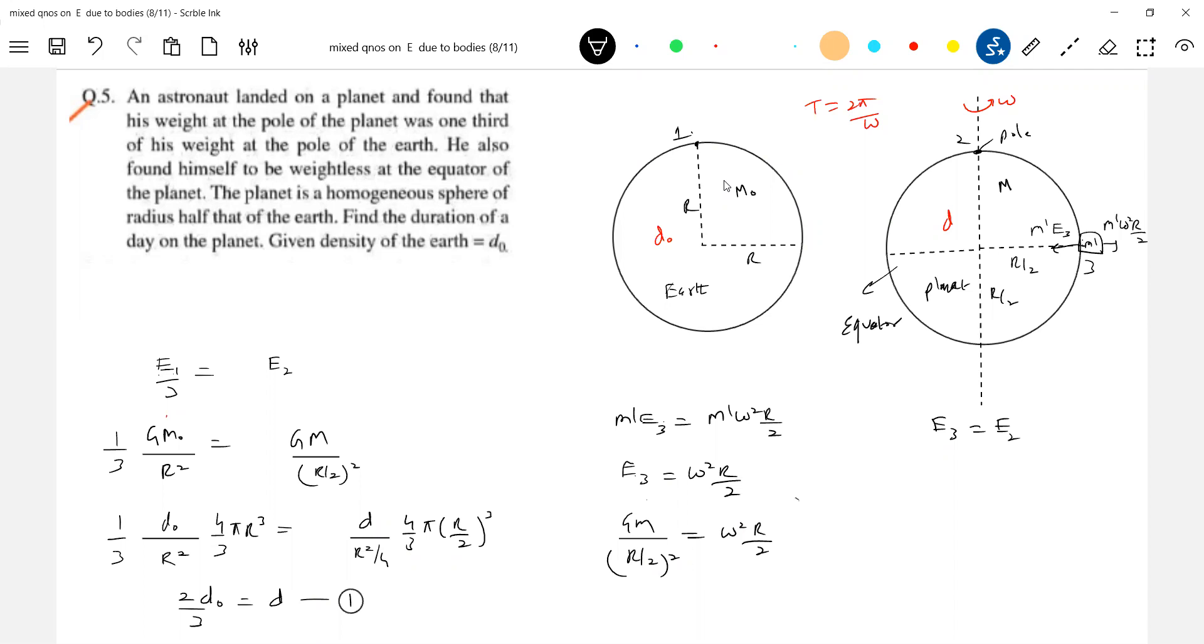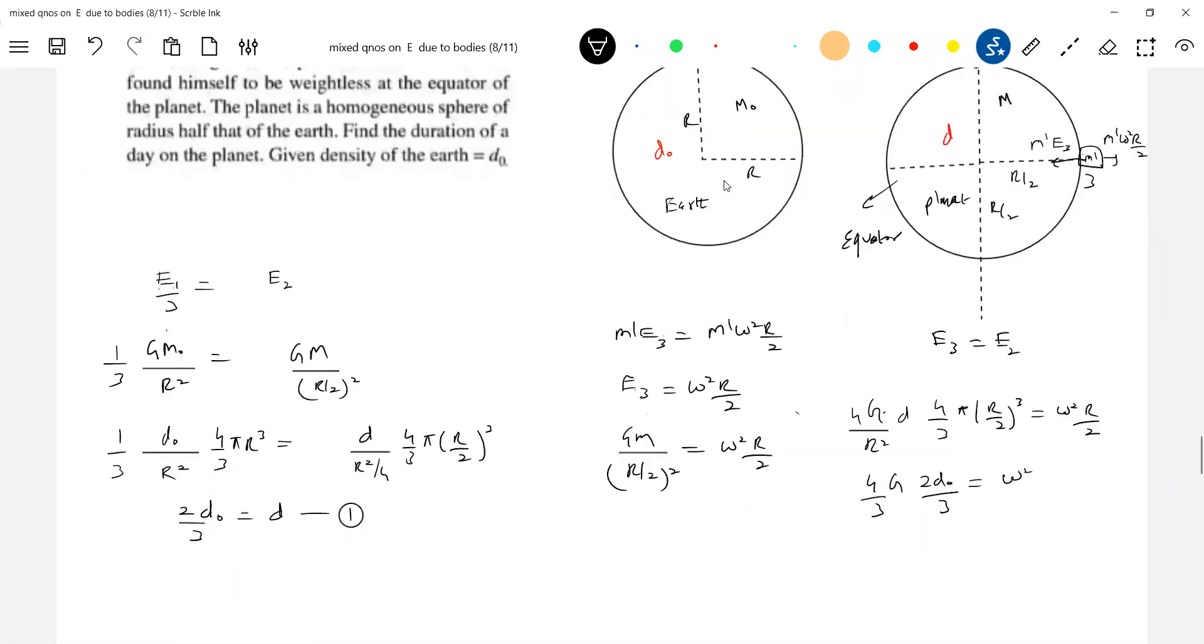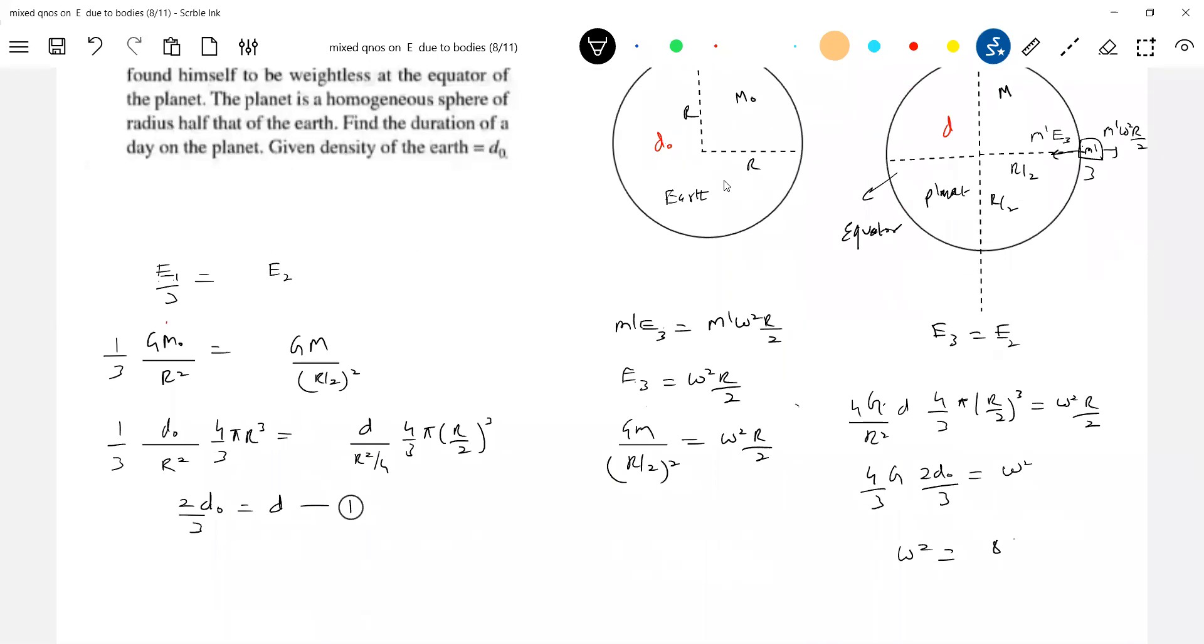What is m? We know density of that, everything we have to just get into calculation. This will be g 4 r square. What is m? Mass of this planet should be density d, 4 by 3 π r by 2 all cube, equal to omega square r by 2. r cube and here r square gets eliminated. 4 square will be there, here 2 cube and this 4 also. So 4 by 3 g, and what is d is equal to 2d0 by 3, equal to omega square.